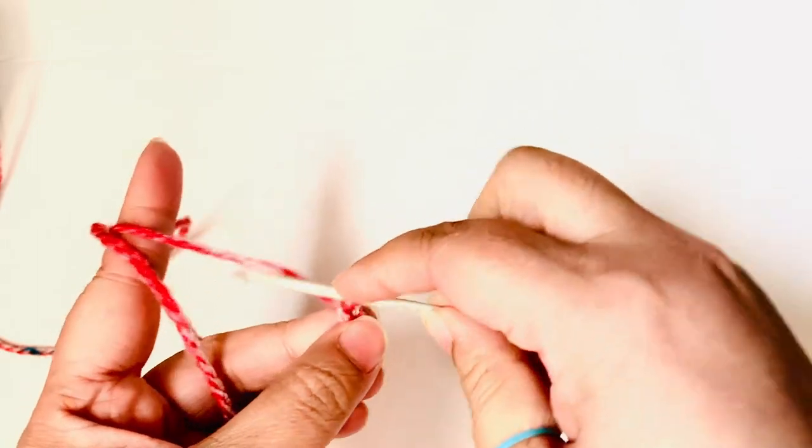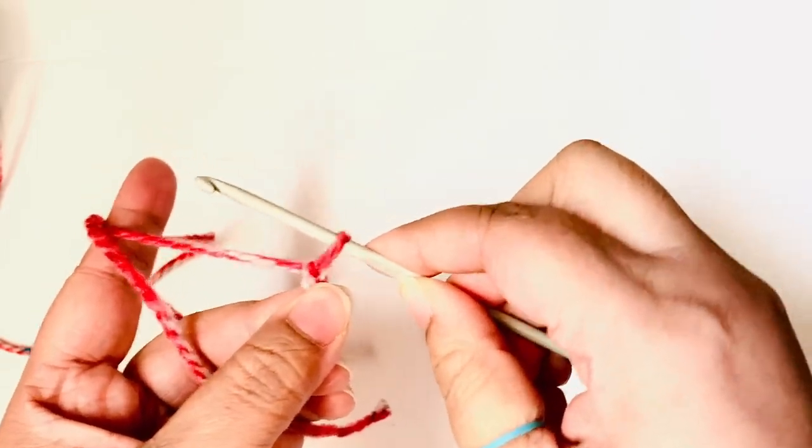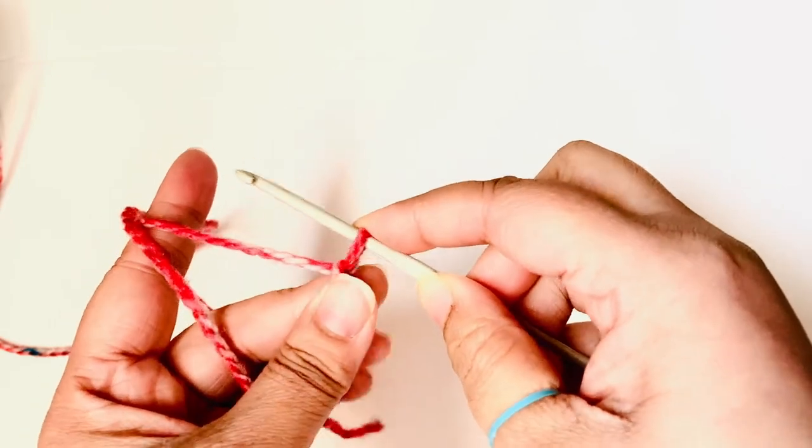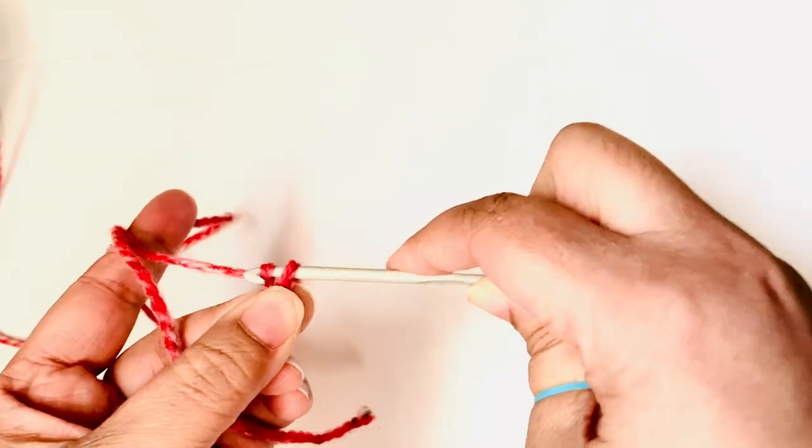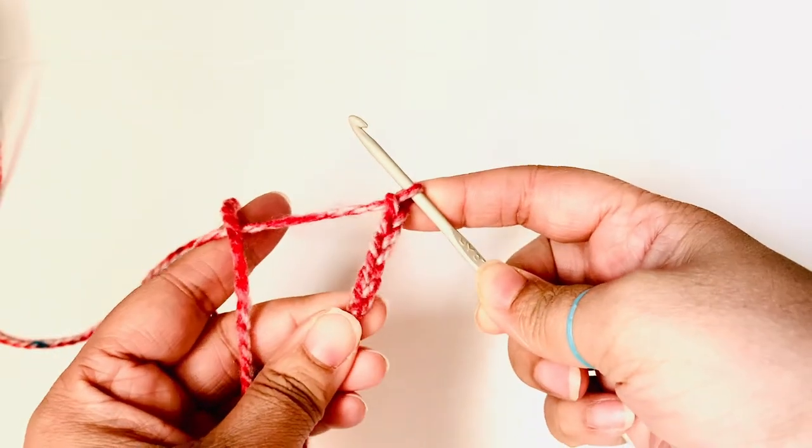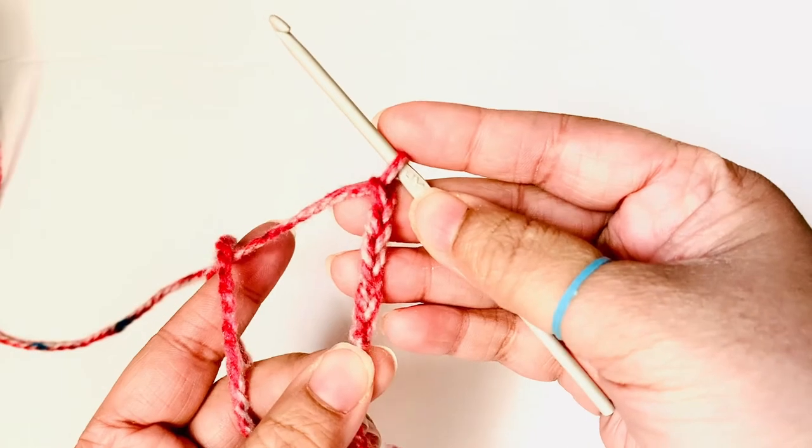Okay, so this might happen to you—the loop here is very tight so I can't fish the yarn over through it. So I'm going to just pull it a little bit and hold it at the neck, and then yarn over, fish it through, and it comes out easily.